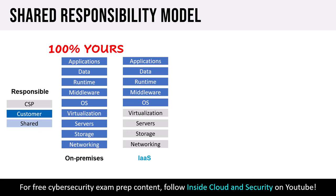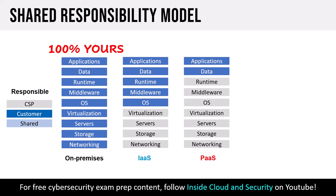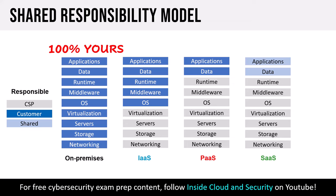Moving into PaaS, the cloud service provider takes on more responsibility — now managing the OS, middleware, and runtime. As a customer, we're really just responsible for our applications and our data. Moving into SaaS — thinking services like Office 365 — the CSP takes on even more responsibility, with shared responsibility for data and application configuration. As we move from IaaS into PaaS and SaaS, the CSP progressively onboards more and more responsibility, allowing us to focus simply on using the service.